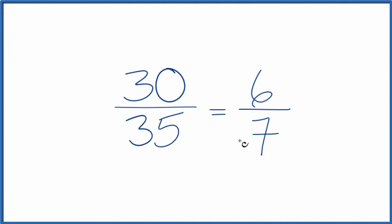And these are equivalent. They have the same value. It's just that we've simplified or reduced 30 over 35 down to 6 over 7, and we can't reduce that any further.